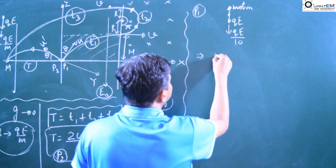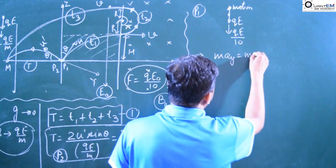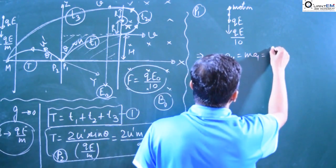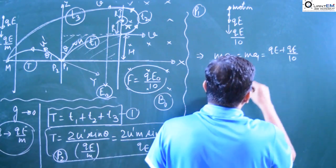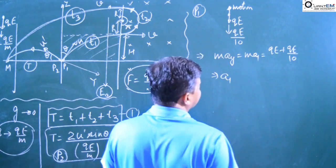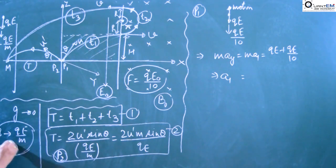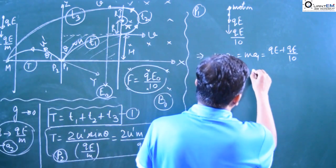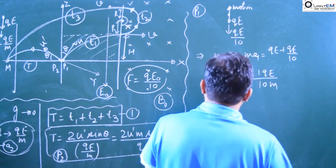What is the net force experienced by the first particle? Let's call the acceleration a1 for the first particle. That is equal to qE plus qE/10. And for the second particle, the acceleration a2 is qE/m. So for the first particle, it is 11qE/10 — that gives us a1 = 11qE/10m.